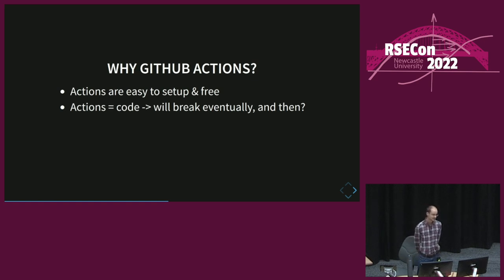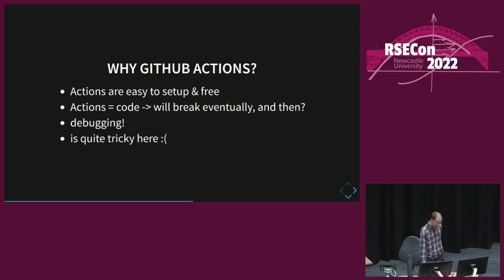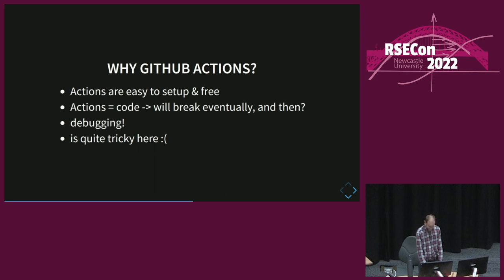Why should you use GitHub Actions? They are very easy to set up and free if you're using GitHub already — I'll show you later how easy it is; I'll do it live. The problem is that actions are essentially code and eventually they will break. And what do we do then? Debugging — but that's quite tricky here. Shout out to GitHub for providing an amazing service, not just the repos, but also GitHub Actions. You can get everything for free. It's just amazing.